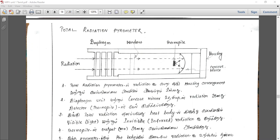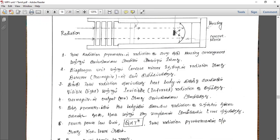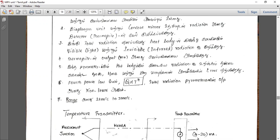The detector produces an equivalent EMF. The EMF is calibrated to temperature readings. This follows the fourth power law: Q is proportional to T to the power 4. The output is non-linear. The range is 1,200 to 3,500 degrees centigrade.